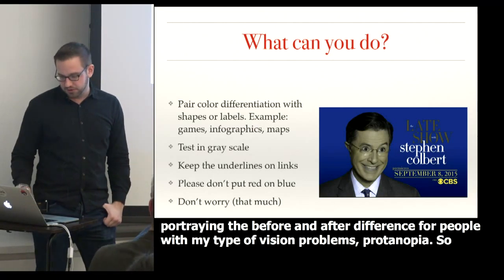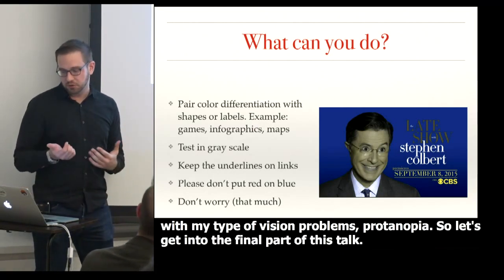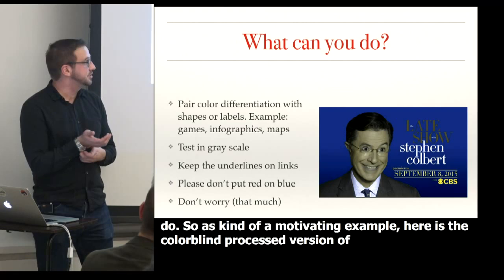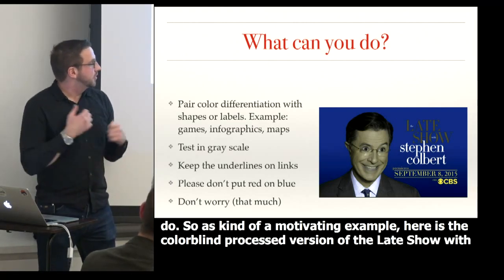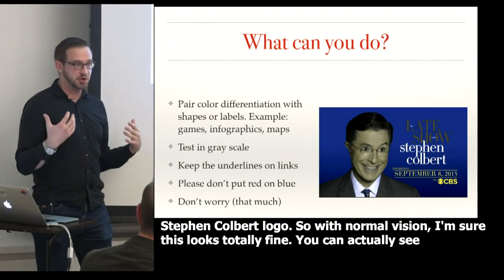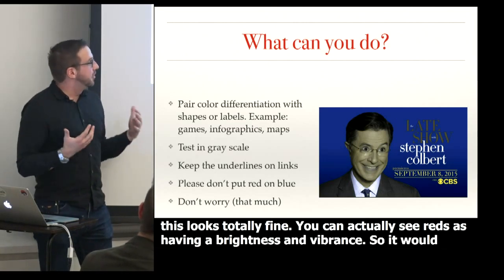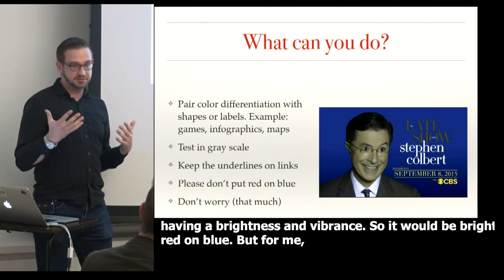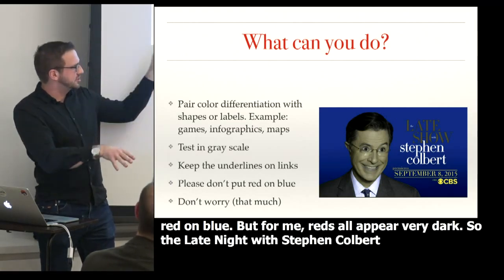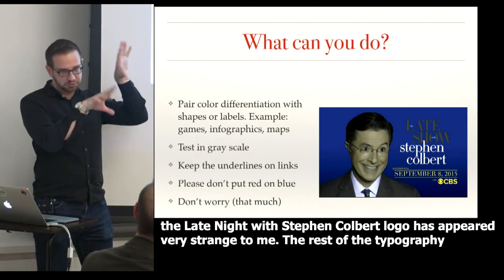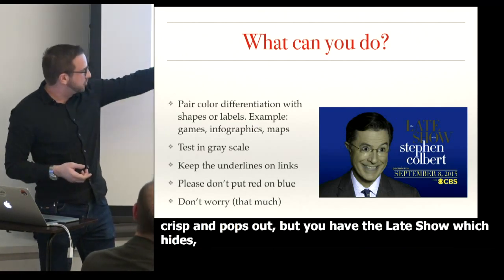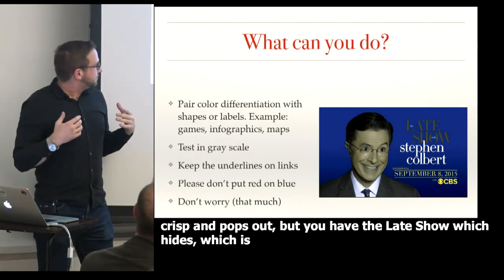Let's get into the final part of the talk — what can you do? As a motivating example, here is the colorblind-processed version of the Late Show with Stephen Colbert logo. With normal vision, you can see reds as bright and vibrant — bright red on blue. But for me, reds all appear very dark. The Late Show logo has always looked strange to me because the rest of the typography is crisp and pops, and then 'The Late Show' really hides — dark red on dark blue.